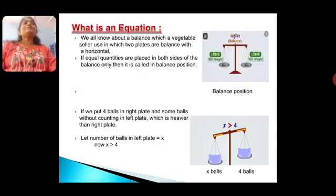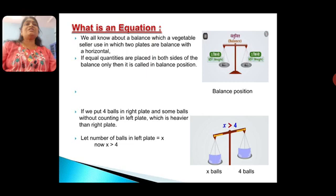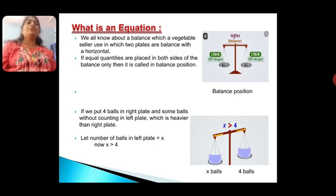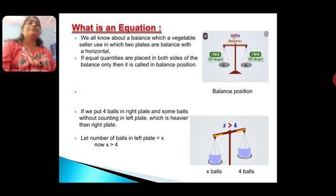Now, what is an equation? Students, we know about a balance which a vegetable seller uses. The vegetable seller uses a balance in which two plates are balanced with a horizontal. If equal quantities are placed in both sides of the balance, then it is called a balance position. In the picture, you can see the balance — both plates have equal quantities, therefore it is the balance position.